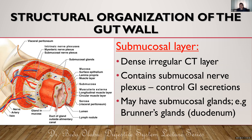Important to note is that the submucosal layer may also have some glands, and there are only two regions of the GIT that have submucosal glands: the esophagus and the duodenum. The submucosal glands of the duodenum are in particular called Brunner's glands. So remember the submucosal layer is a dense irregular connective tissue zone which has nerves, and in the esophagus and duodenum it also contains glands.